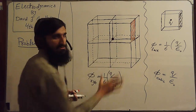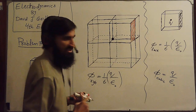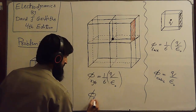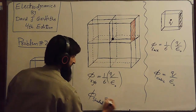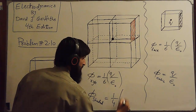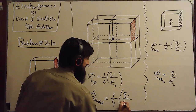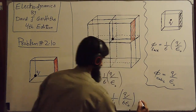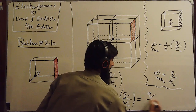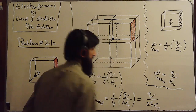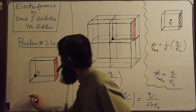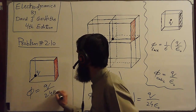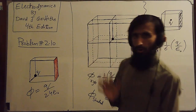This larger right face has been divided into four sub-faces, so the flux through that shaded portion will be equal to (1/4) × (q / 6ε₀), which comes out to be q / 24ε₀. So our required flux through this shaded portion is q / 24ε₀. Hope that's clear!